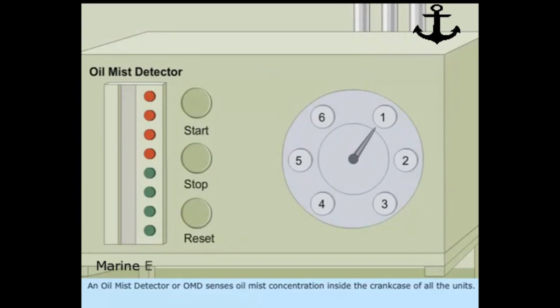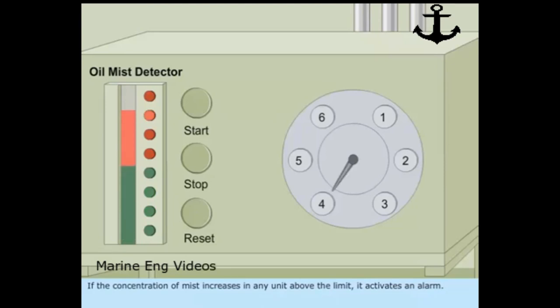An oil mist detector or OMD senses oil mist concentration inside the crankcase of all the units. If the concentration of mist increases in any unit above the limit, it activates an alarm.